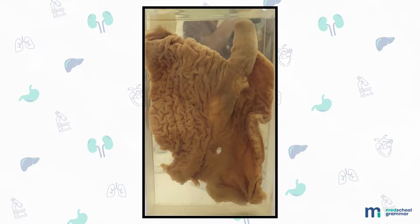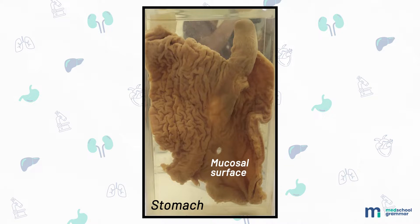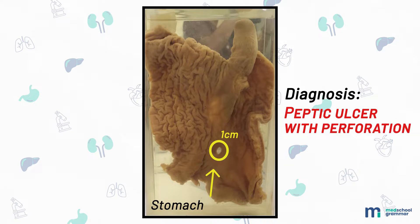Let's begin with our first specimen, which is there on your screen. This is a wet-mounted specimen of the stomach measuring 20 by 18 by 1 centimeters, showing the external surface and a mucosal surface. The external surface is unremarkable, while the mucosa of the stomach is thinned out with a single round-oval ulcer, 1 centimeter in diameter, with perforation at the lower part of the body of the stomach. The surrounding stomach mucosa is hypertrophic. My diagnosis: this is a specimen of peptic ulcer with perforation.